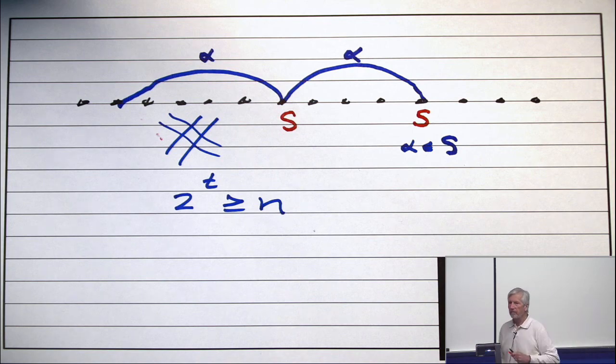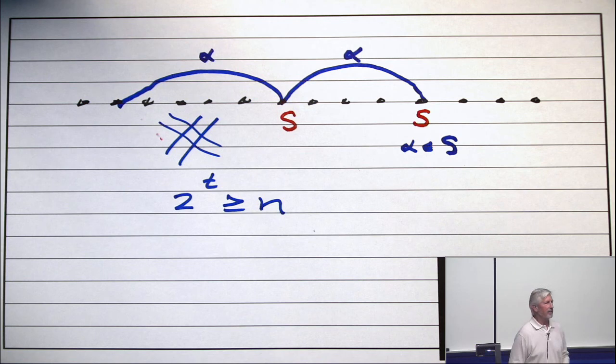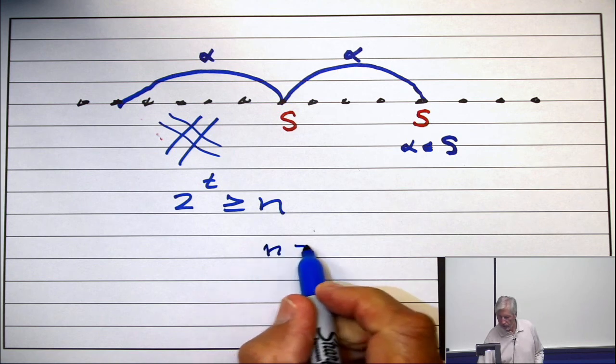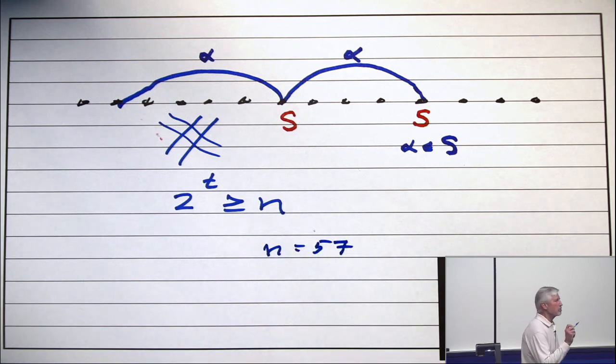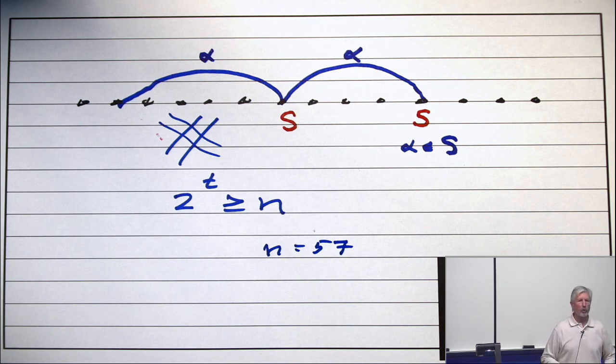For example, if n is 57, and this is just for instance, what's the smallest t so that 2 to the t is at least 57?